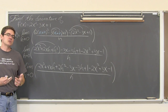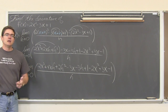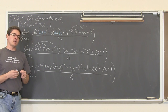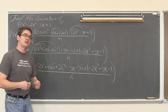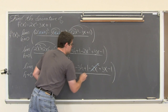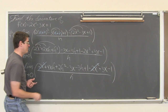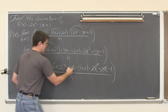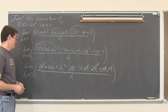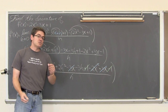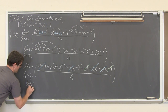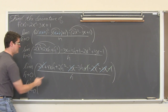Combine all your like terms. If you do all your cancellation and get to a point where you cannot factor the numerator to get the h in the denominator to cancel out, you need to go back through your work and see where you made a mistake. Because you should get to a point where that denominator after factoring will cancel. 2x squared and negative 2x squared cancels. Negative 3x and positive 3x cancel. Positive 1 and negative 1 cancel. And you see all the terms that are left have an h in them — that is a good sign.